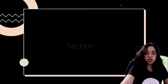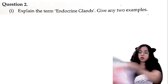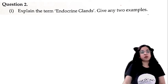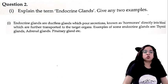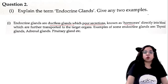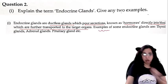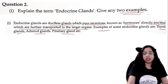Now we move to Section B, where you have to attempt any three questions. First question: explain the term endocrine glands and give two examples. Endocrine glands are ductless glands which pour their secretions — known as hormones — directly into the blood, which are further transported to the target organs. Examples: you can write any two — thyroid gland, adrenal gland, pituitary gland, or any other endocrine gland.